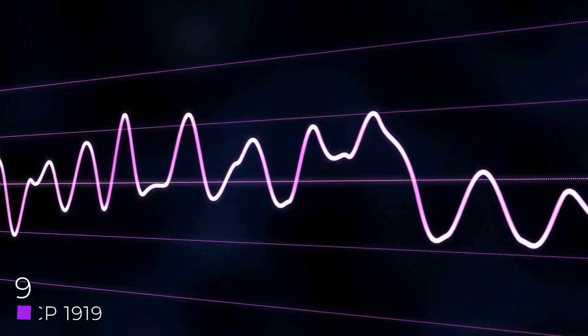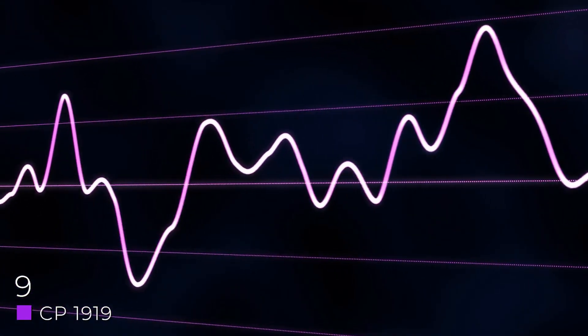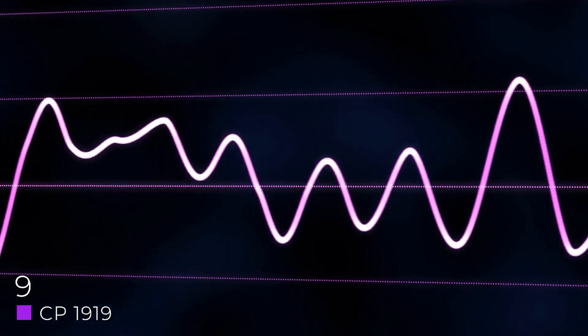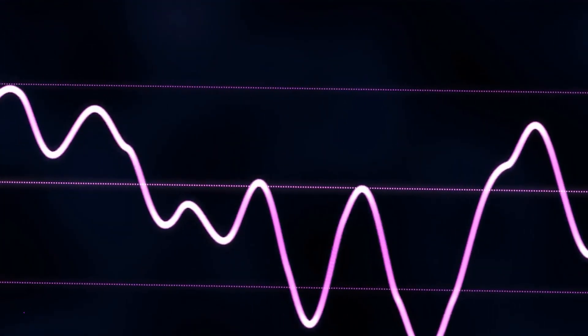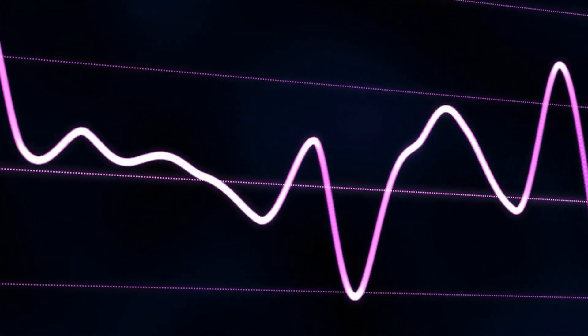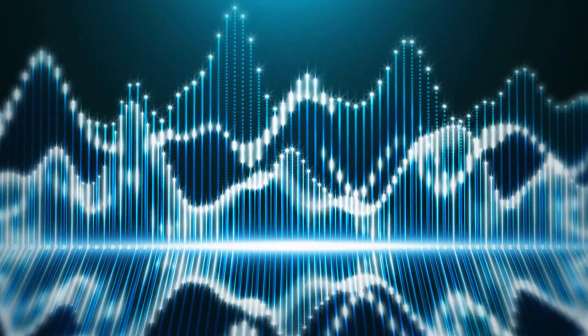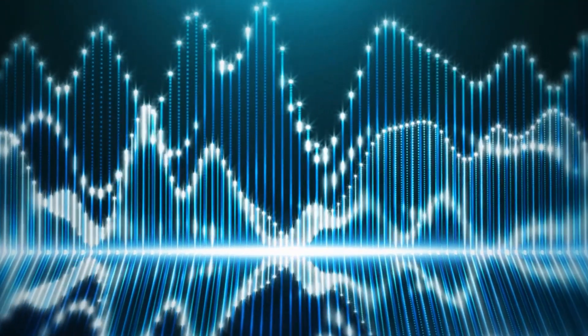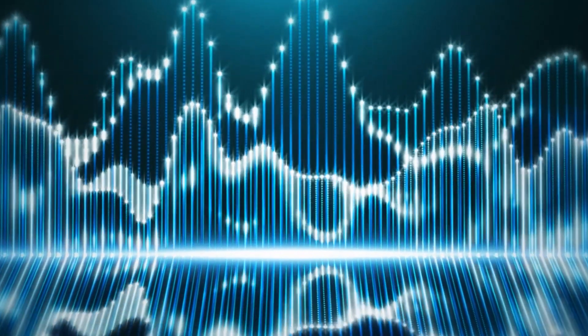Number 9: CP 1919. In 1967, a radio signal was detected by Jocelyn Bell and Anthony Hooish. The signal had a 1.3 second period and 0.04 second pulse width. It originated at celestial coordinates 19 hours, 19 minutes, right ascension, plus 21 degrees declination.